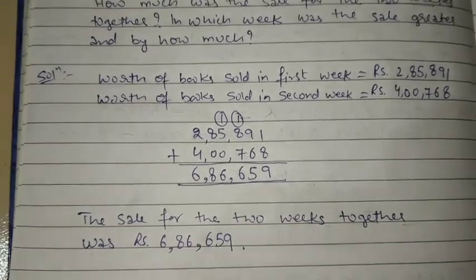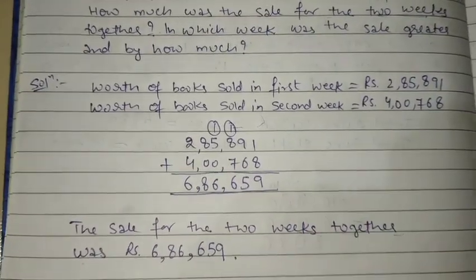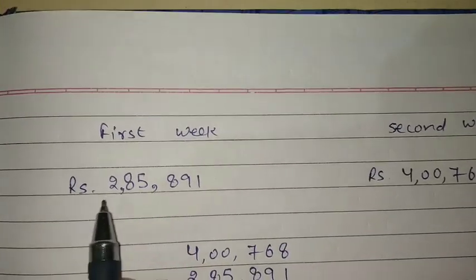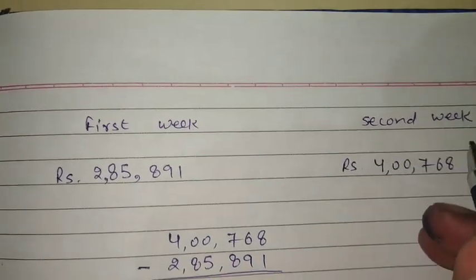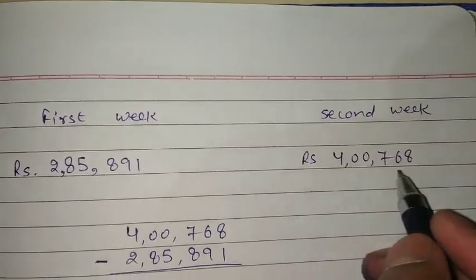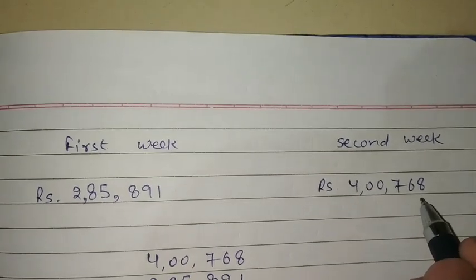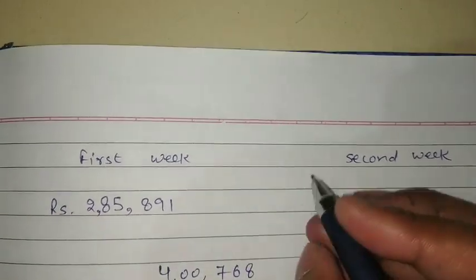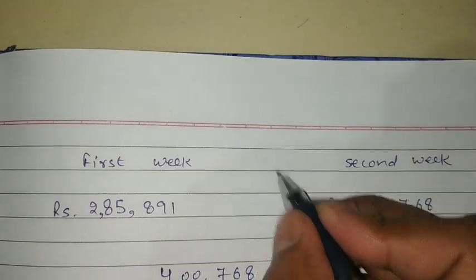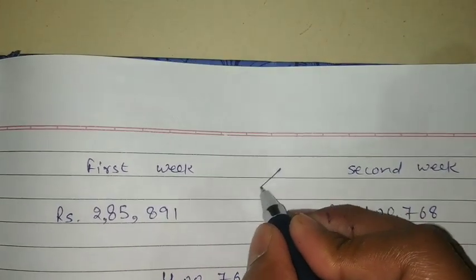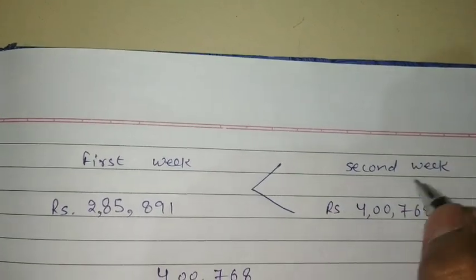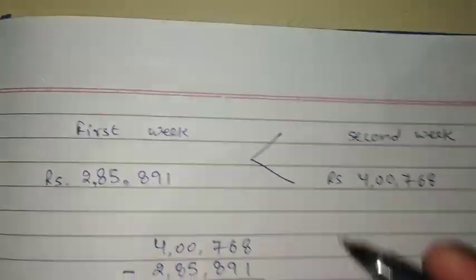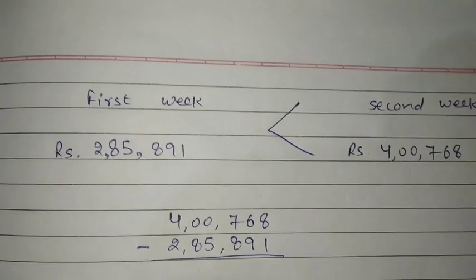Now we need to compare which week had greater sales. First week: 2,85,891. Second week: 4,00,768. Clearly 4,00,000 is greater than 2,00,000, so the second week had greater sales. To find by how much, we subtract the smaller from the larger.